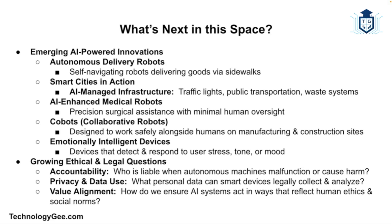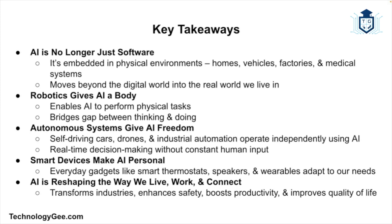As these technologies grow, so do the ethical and legal questions. Who's responsible if an autonomous drone crashes? What data should your smart speaker be allowed to collect? How do we keep AI systems aligned with human values? These are the challenges and opportunities that come with living in an intelligent world. AI isn't just about software anymore — it's in our homes, driving on our roads, walking around in factories, and helping us live longer, safer, and smarter lives. Robotics gives AI a body, autonomous systems give it freedom, and smart devices make it personal.